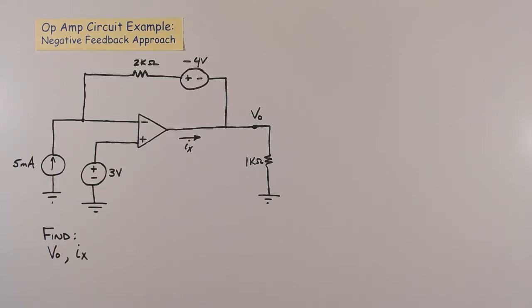The problem is to find the voltage at the output of the circuit, Vo, and the current out of the op-amp, Ix.